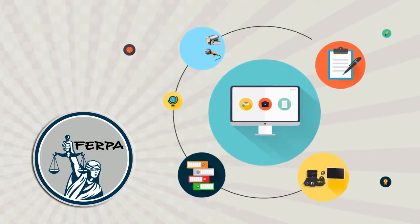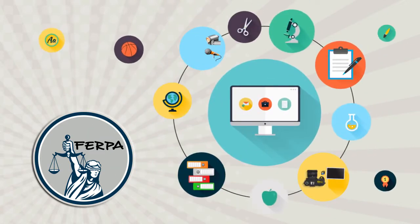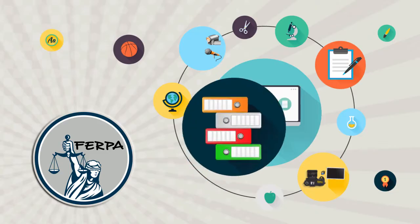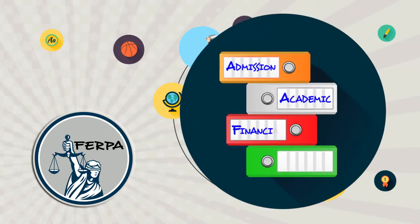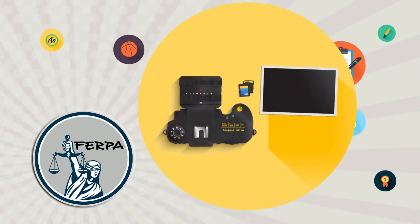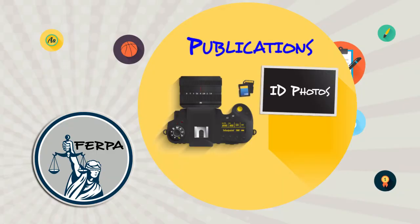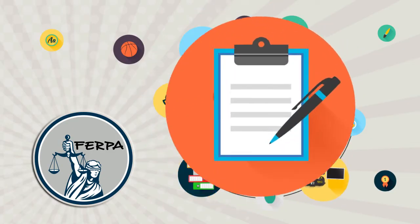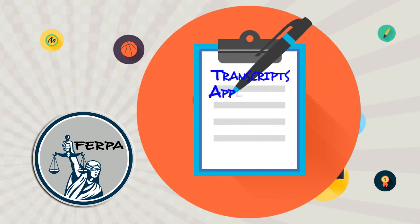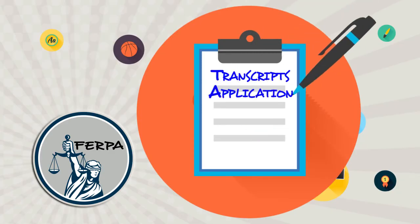An education record may include all academic records, admission, academic, financial, disciplinary records, photographs, publications, ID photos, class roster photos, written documents, transcripts, and application materials.